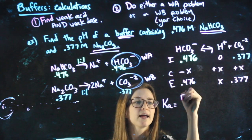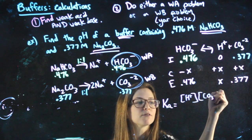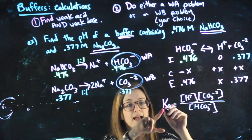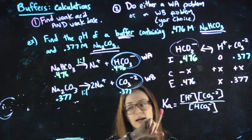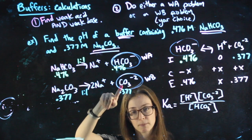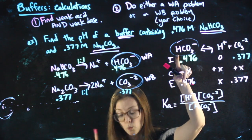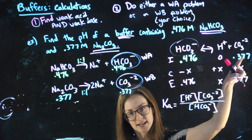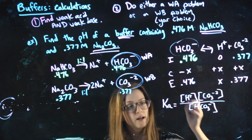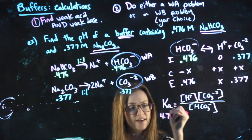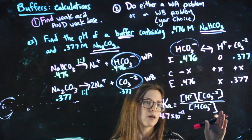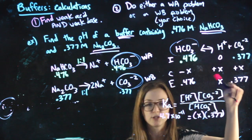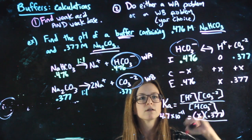Since I chose to do a weak acid problem, I need to do my Ka, which is my H times my CO3. It's probably been a while since you wrote this whole thing out. Over my HCO3 minus. The Ka will be for my weak acid. If I had done the weak base problem, I would have done a KB, and I would have used the value for my base. But I used the weak acid value of HCO3. HCO3 is on there as an acid and a base. So you use the value for an acid because we treated it as an acid. So looking on my chart, it has a Ka value of 4.7 times 10 to the negative 11 equals products X times 0.377. It's not X squared because we don't have two X's down here over 0.476.